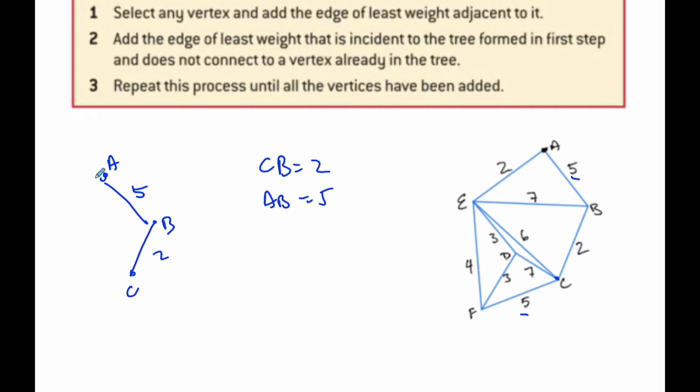And so now I'm looking at A, and I'm looking at C or B, and I'm looking at which is smallest of those three that are available. Well, that's going to be AE, which is 2. And so now I have AE, which is 2.